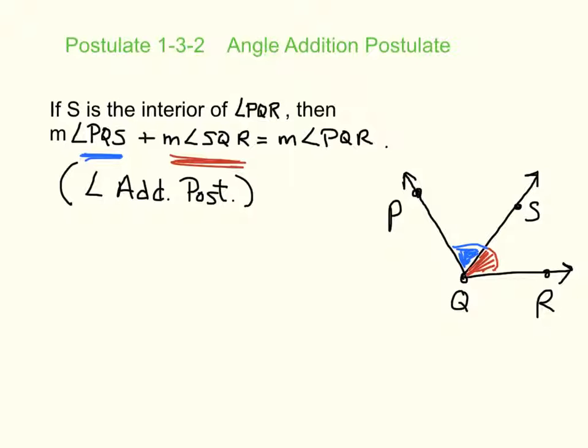Notice what I did here in parentheses. Later on, you're going to have to use this as an explanation on why you're doing something in a proof. You can write down this entire thing or anytime you see the word angle, you write an angle. Addition postulate. Abbreviations are going to be your best friend. So this is how you would abbreviate the angle addition postulate.